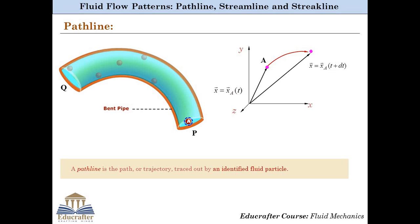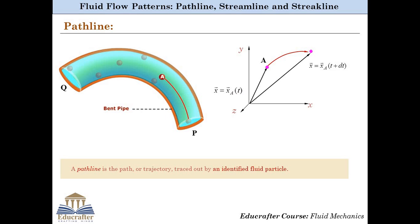Using the same example of the bent pipe, particle A is moving from point P to point Q along the red path, and hence this red path is known as the pathline of particle A.